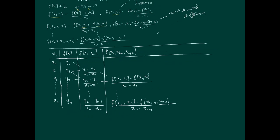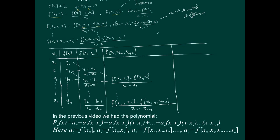In this way we've computed the second divided difference, and we continue similarly to compute the third, fourth, fifth, and up to the nth divided difference. That's how the algorithm works. In the next video we'll do an example.